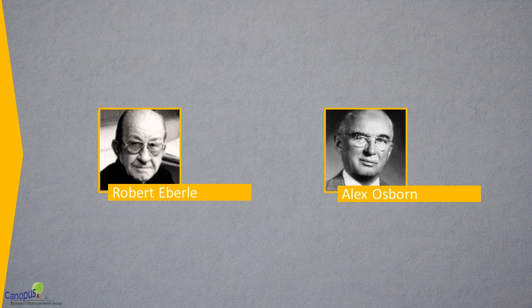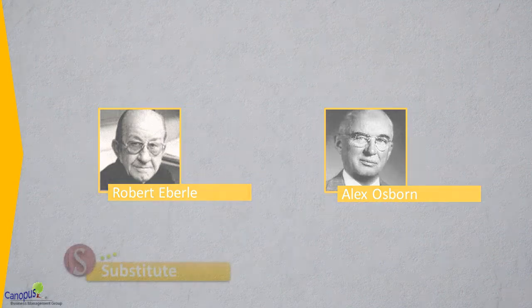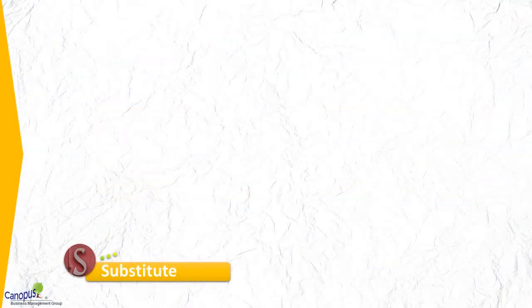Now we will talk about what Scamper is. Scamper is an acronym where S stands for simplify or substitute. This is the first principle of Scamper. In this principle, we consider how we can simplify or substitute the resources such as the components, material, people, etc.